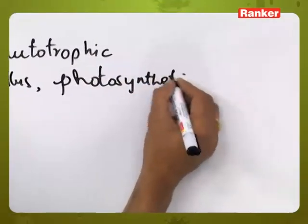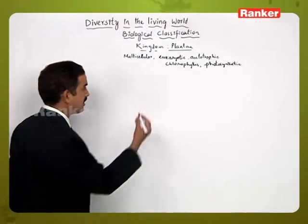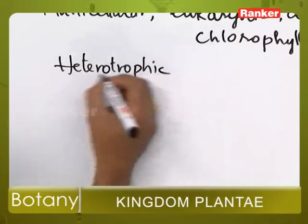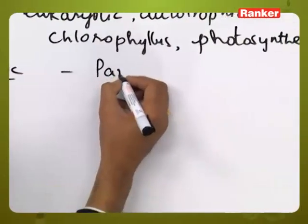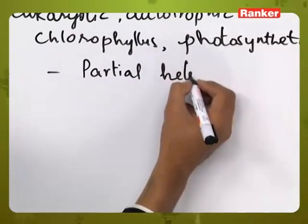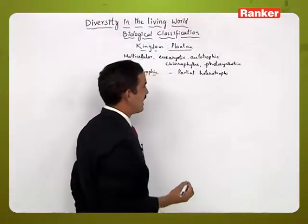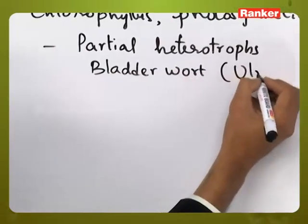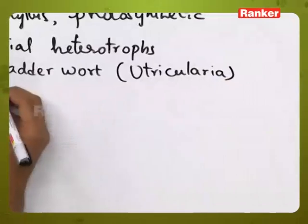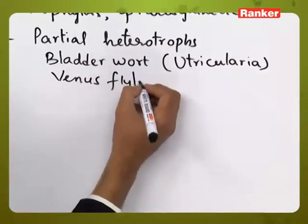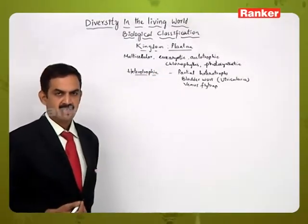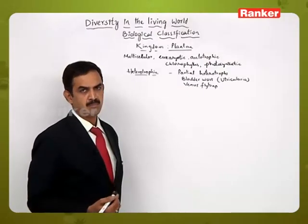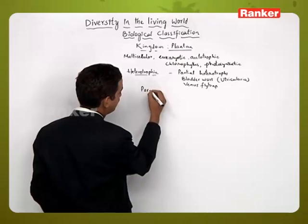At the same time, some of them are heterotrophic in nature also. Some of them are partial heterotrophs, like this type of nature can be seen in Utricularia (bladderwort), Venus flytrap, pitcher plant, and Dionaea. Many such examples are there which are partial heterotrophs, despite that they have been kept under Kingdom Plantae.